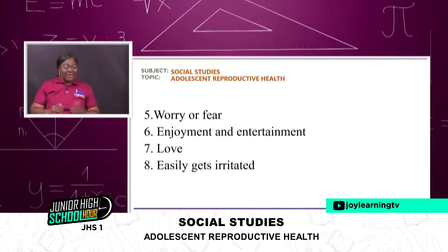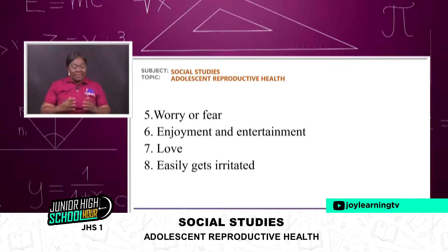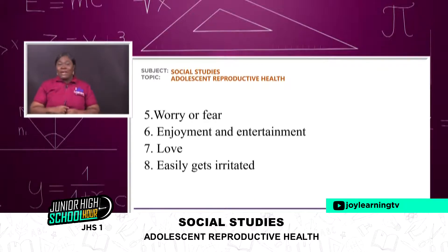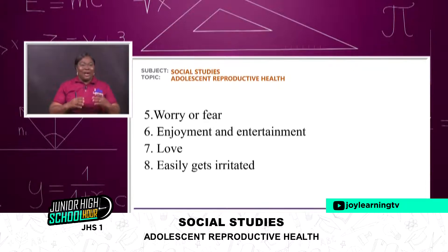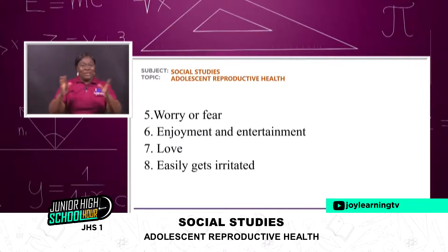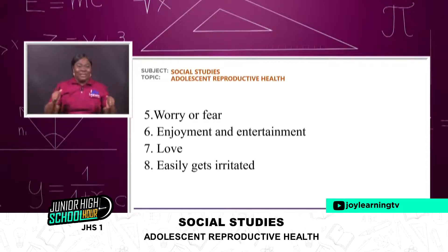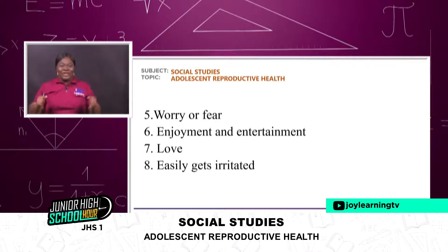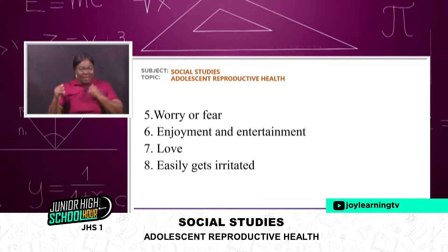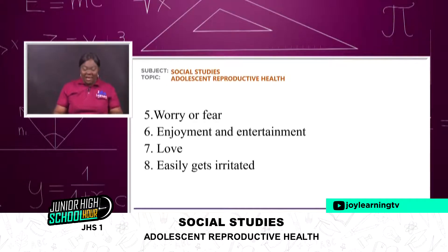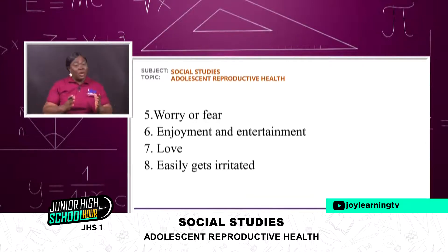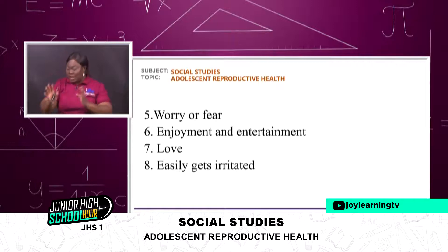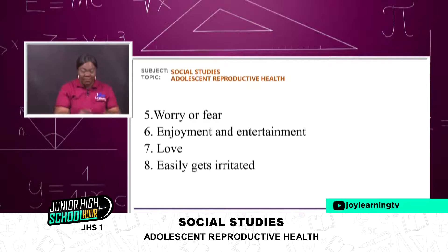The fifth point is worry or fear. Then we have enjoyment and entertainment. Adolescent life — when you go to some schools and they are having their open day or fun day, adolescents are so active and enjoying. They love enjoyment and entertainment. They love, as we said, and they also easily get irritated. When you are not careful and you tell an adolescent something with a certain word, that adolescent takes offense. So these are some of the attributes of adolescents.